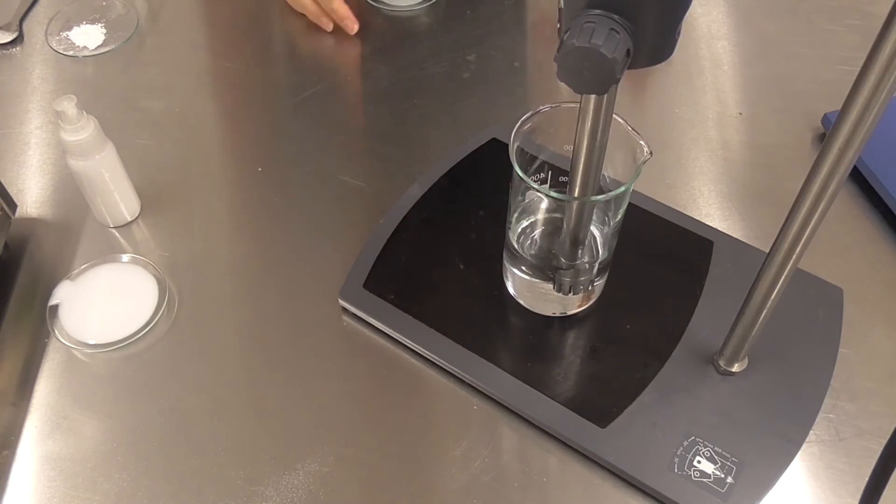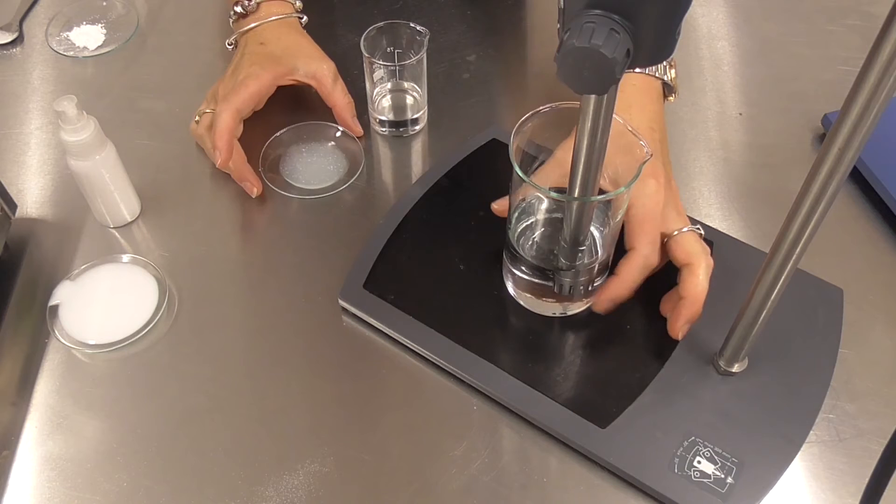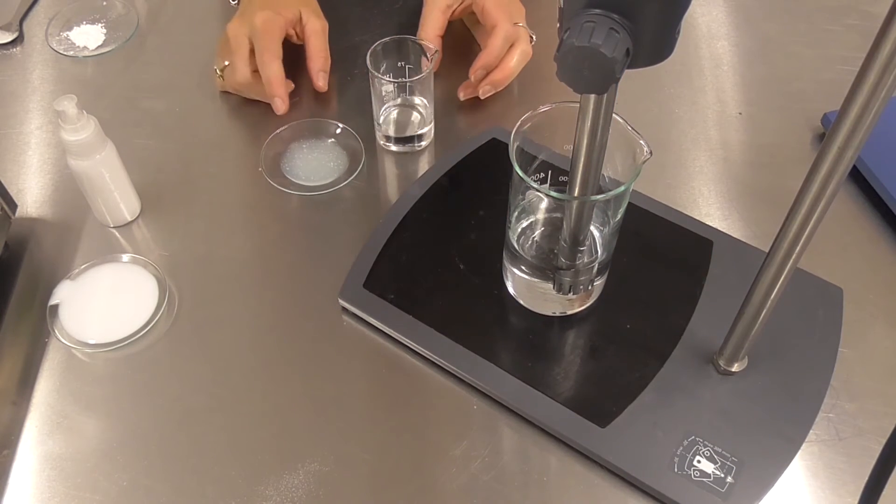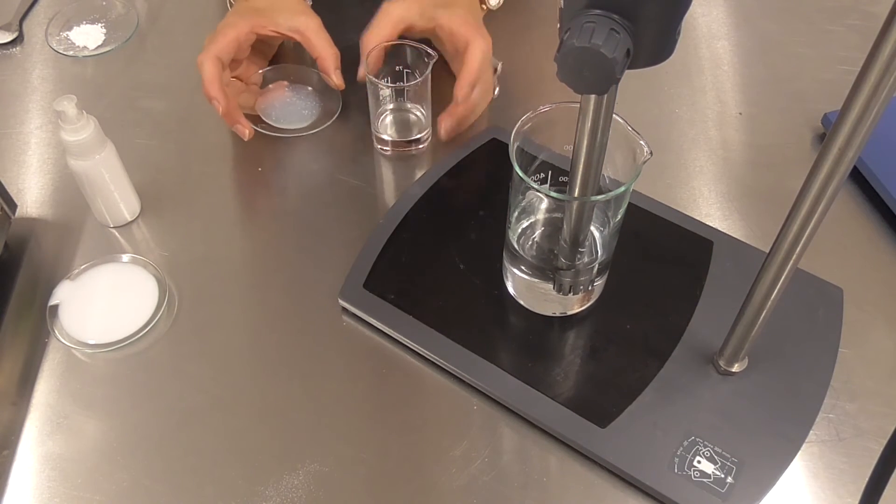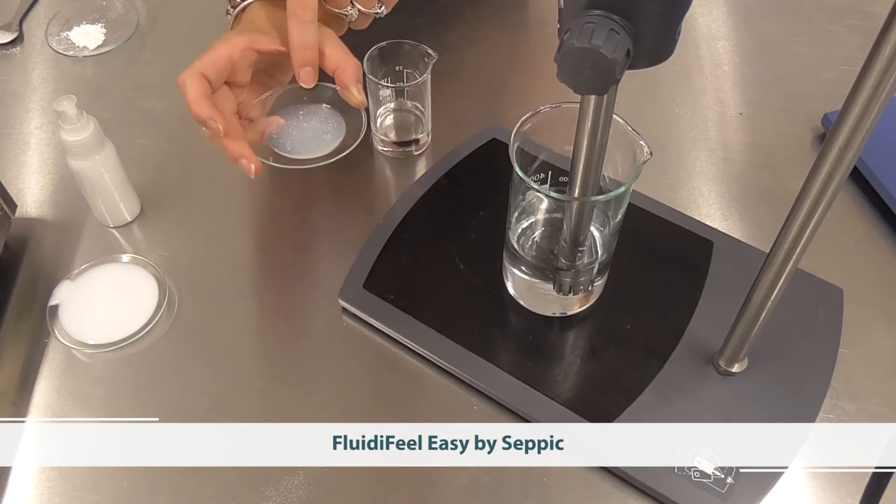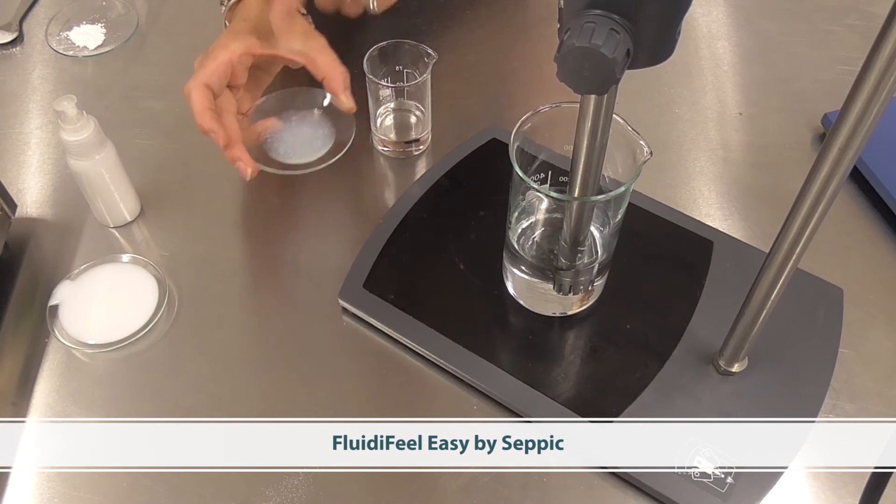The first thing we need to do is form our emulsion. So I have my water phase already prepared here and then next I'm going to make a milky emulsion using Fluidifill Easy by Sepic. This is my oil phase here.